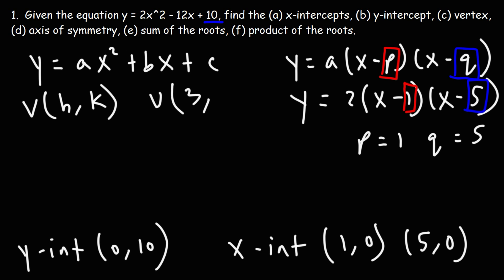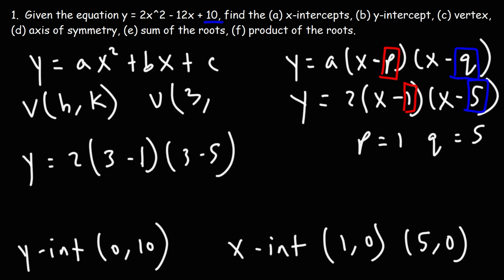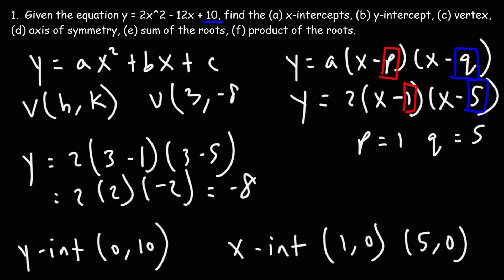To find the y-coordinate of the vertex, we can plug x = 3 into either equation — I'll use the intercept form because it's easier. Replacing x with 3: 3 − 1 is 2, and 3 − 5 is −2. Then 2 times 2 times −2 is −8. As you can see, it's a lot faster using the intercept equation. So the coordinates of the vertex are (3, −8).